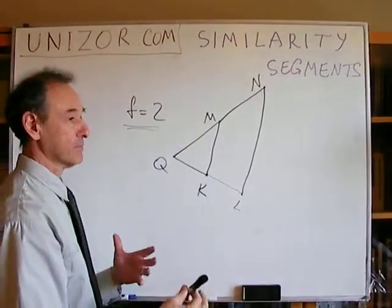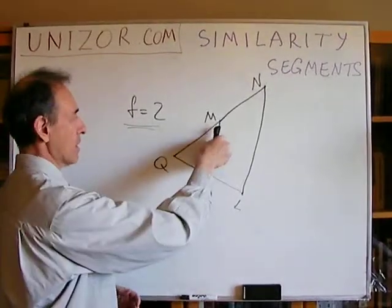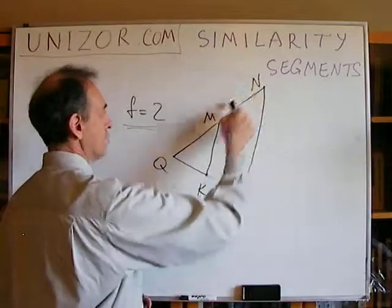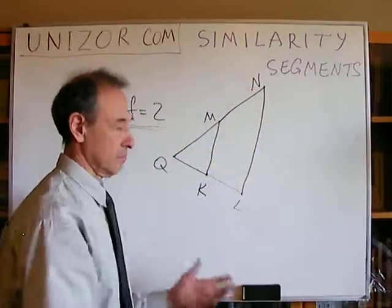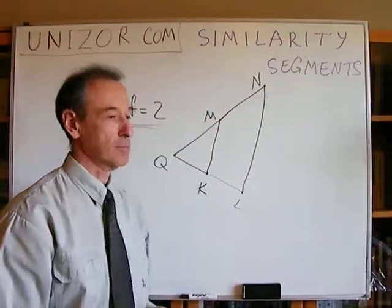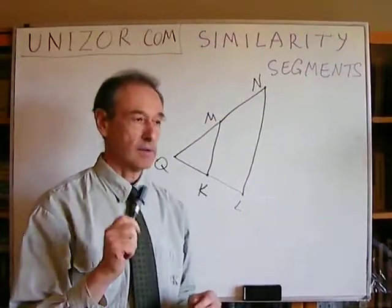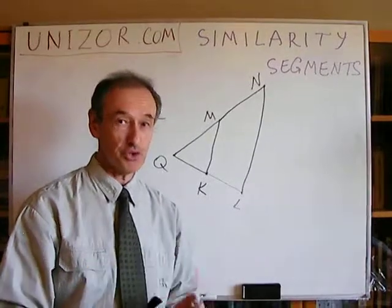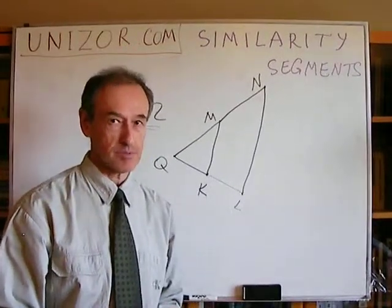So if we have started from this segment MK, then it would just stretch M into N, K into L, make this picture, and obviously NL is twice as big as MK. Okay. So for a factor of 2, we have proven this particular theorem. How about factor of 3 or 4? How about the factor of 3 quarters? That's not as obvious, right?